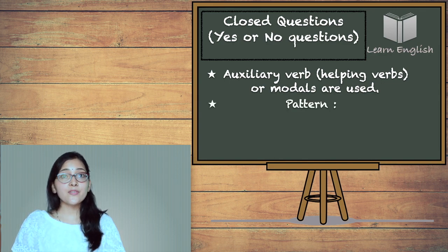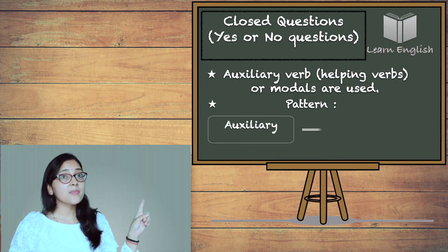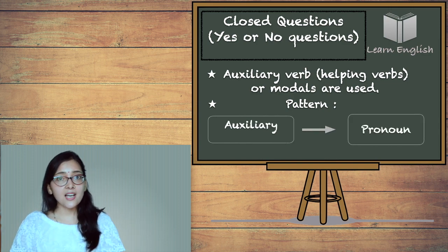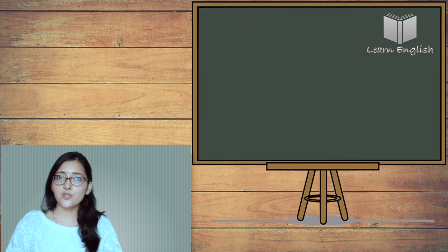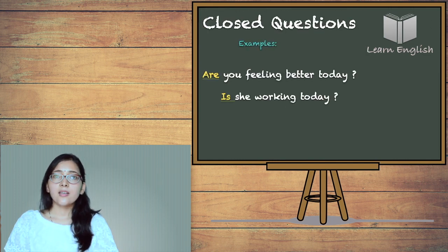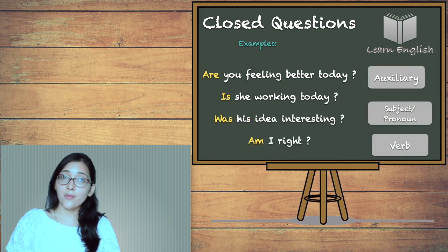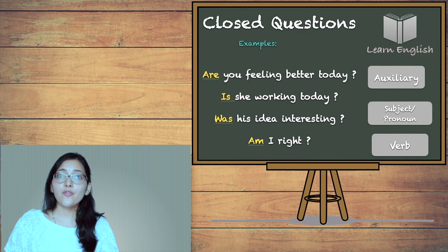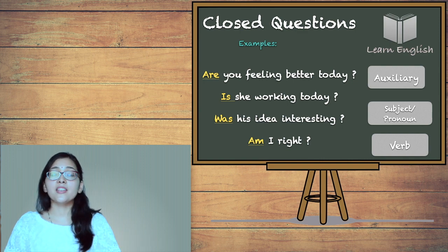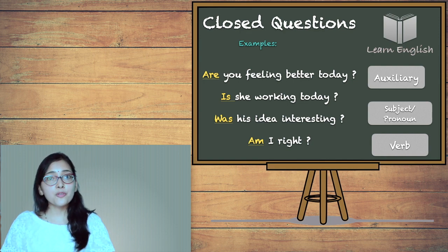Now, remember, these questions always follow a fixed pattern. For example, first comes the auxiliary verb and then comes the pronoun or subject. For example, are you feeling better today? Is she working today? Was this idea interesting? Am I right? All these questions follow a fixed pattern. First comes the auxiliary verb in the beginning of the sentence and then comes the pronoun followed by the main verb.